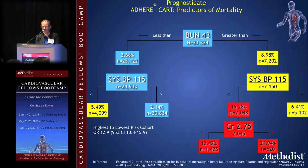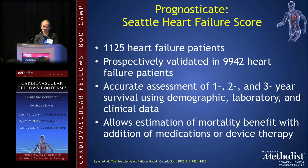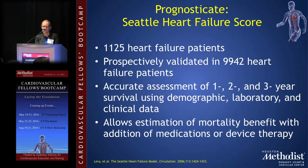Another helpful prognostic tool is the Seattle Heart Failure Score, originally developed in over 1,000 heart failure patients and validated in approximately 9,000 additional patients. It provides an accurate assessment of one-, two-, and three-year survival using demographic data, labs, medications, device therapy, and other clinical data. A calculator is available — even as a phone app — where you can input patient information and model the effects of changing medications or adding device therapy on predicted mortality and outcomes.